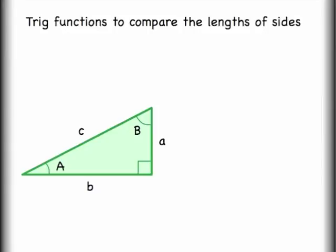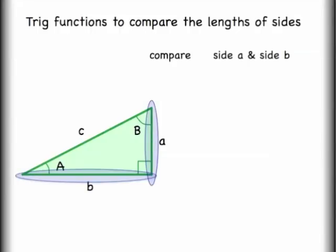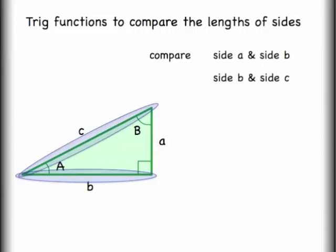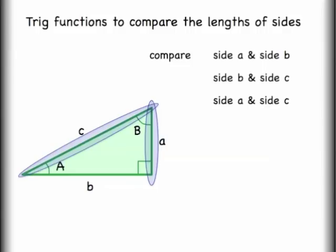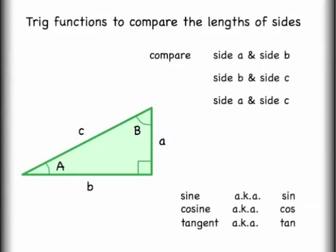This is really where our trig functions come into play. I can compare any two of the three sides of a triangle — A and B, B and C, or A and C — giving us three different trig functions: sine, cosine, and tangent. We tend to use three-letter abbreviations: SIN for sine, COS for cosine, and TAN for tangent.